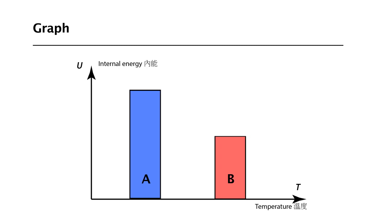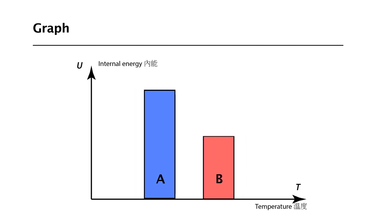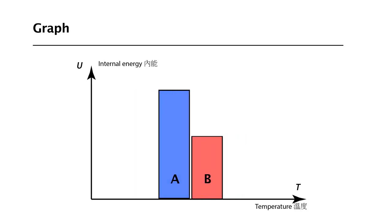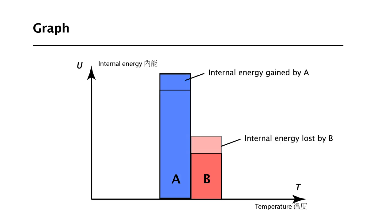When A and B are placed together, heat will flow from B to A because B is hotter. As a result, the internal energy of B will decrease and that of A will increase. The changes in internal energy are the same in magnitude. Therefore, we have this final graph.